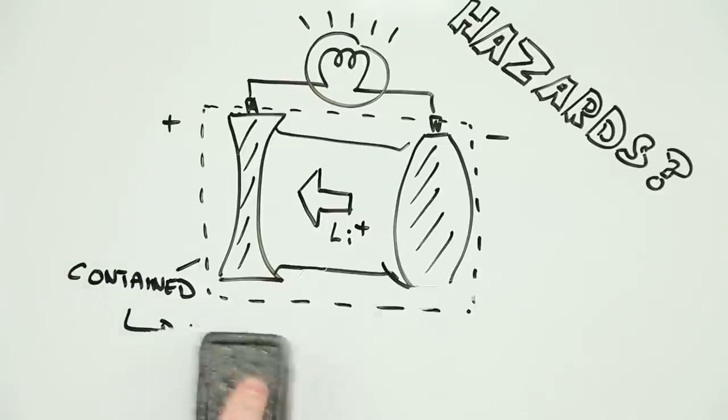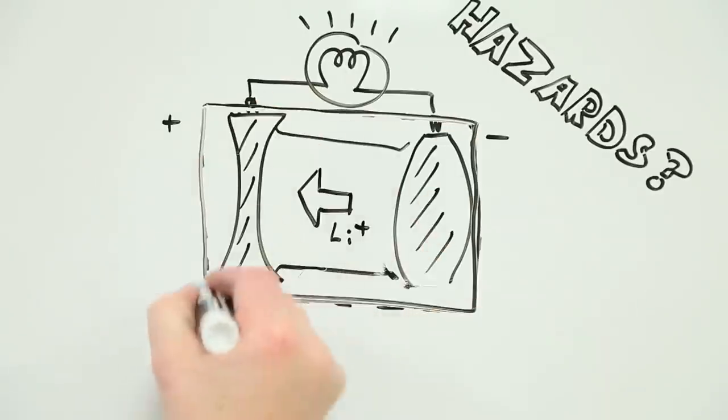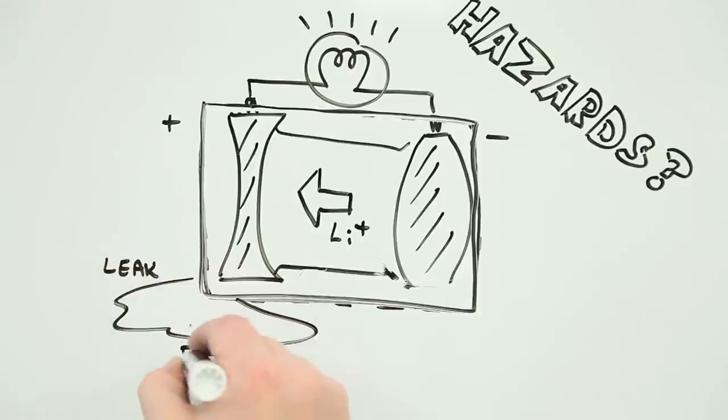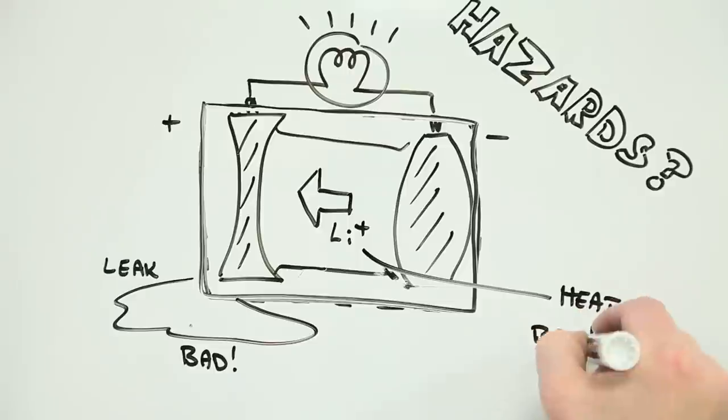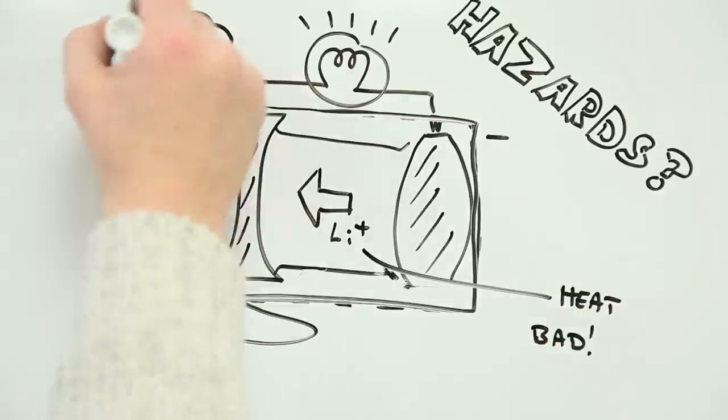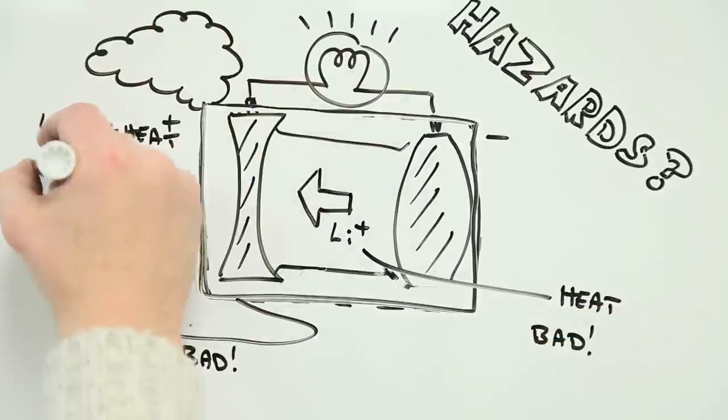As last week's Risk Bites mentioned, the two things that you do not want to do with a lithium ion battery are to mechanically compromise it so that the electrolyte is released, or to allow it to get too hot. And the thing that you really don't want to do is allow both to happen at the same time.